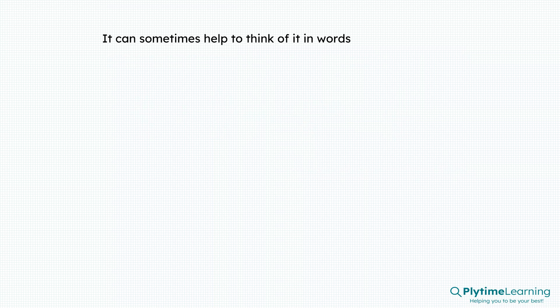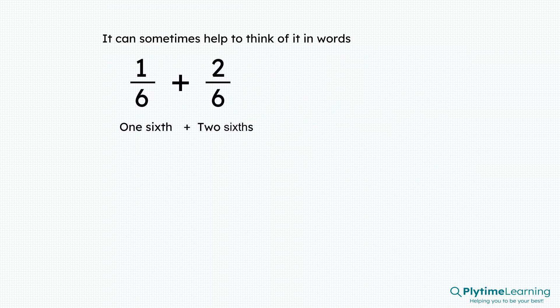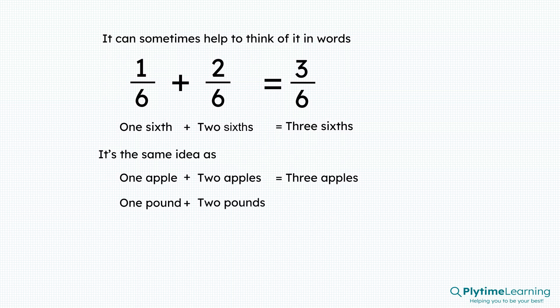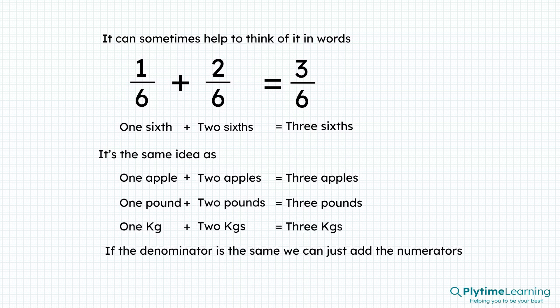The denominator stays the same. It can sometimes help to think of it in words. One sixth plus two sixths equals three sixths — it's the same idea as one apple plus two apples equals three apples, or one pound plus two pounds equals three pounds, or one kilogram plus two kilograms equals three kilograms. If the denominator is the same, we can just add the numerators.